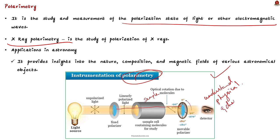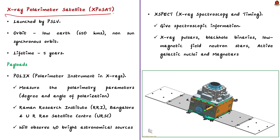X-ray polarimetry is mainly used in astrophysics and astronomy for the study of various celestial objects. It helps astronomers analyze the polarization of X-rays emitted from distant celestial bodies. Analyzing the polarization provides insights into the nature, composition, and magnetic fields of astronomical objects like neutron stars and black holes. Let us now see about the X-ray polarimeter satellite to be launched by India, which is in short called XPoSat.